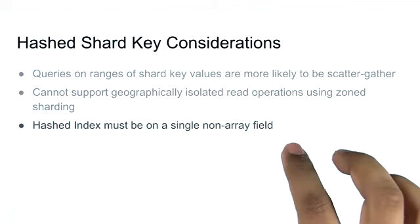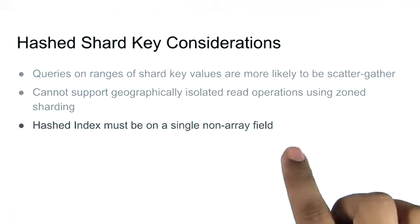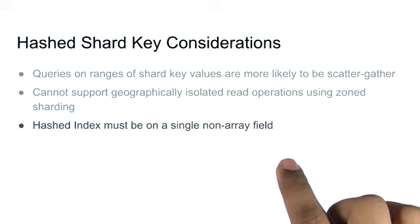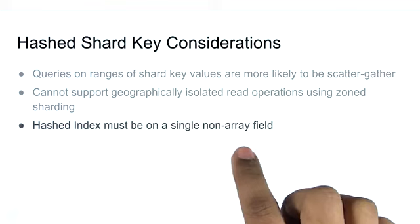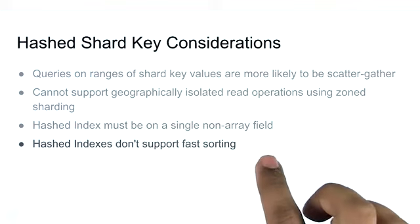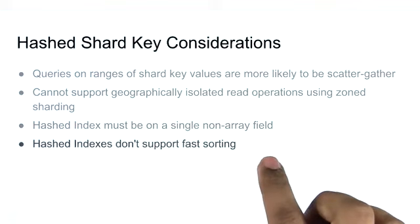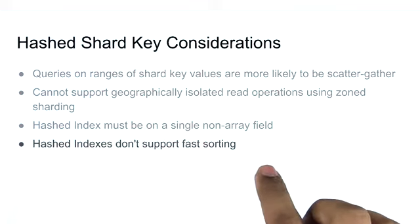You can't create hashed compound indexes. You can only hash a single field shard key. That plays into why these are best used for monotonically changing single fields like timestamps. Also, the value in the hashed index must not be an array. Finally, because the index is using hashed values, you're going to lose the performance an index can provide for sorting documents on the shard key.